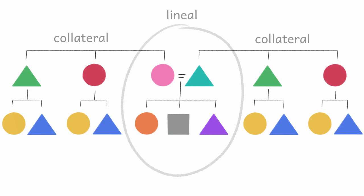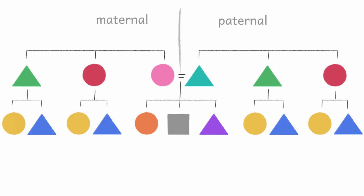We can get more descriptive though. If we distinguish maternal and paternal lines, we can distinguish between a mother's mother and a father's mother, and between a father's sister's daughter and a mother's brother's daughter.